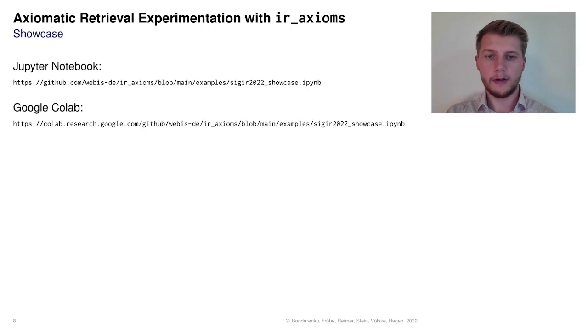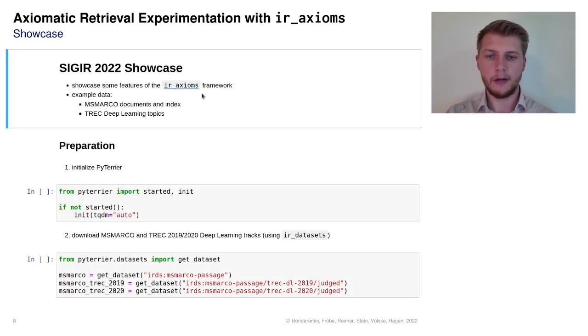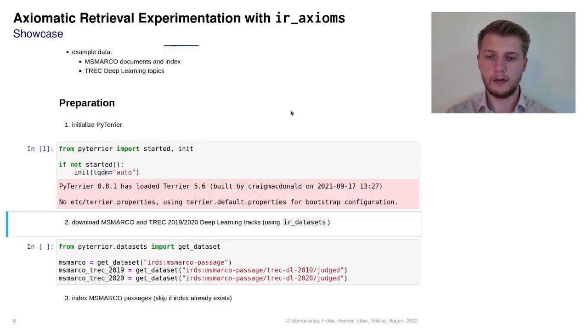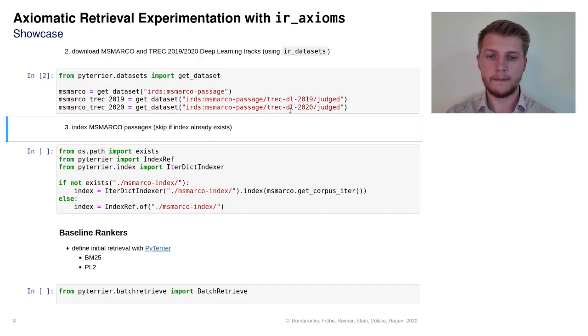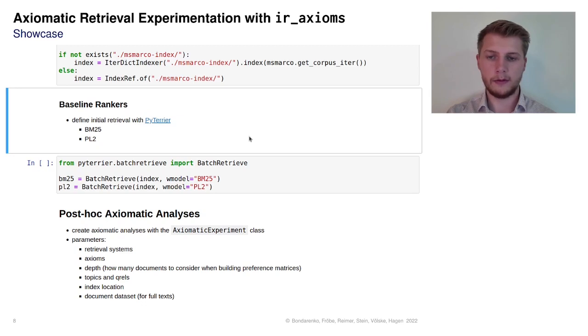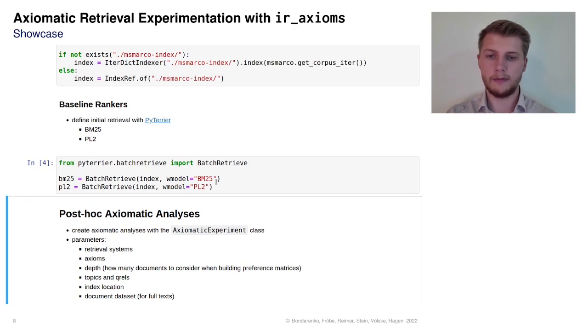We have now prepared some examples of how IR axioms can be used with example data from the MS MARCO dataset and TREC Deep Learning topics. To prepare our experiments, we first need to initialize PyTerrier, download the MS MARCO dataset, and index passages from the dataset. We can then define baseline rankers to compare in our analyses. In this case, BM25 and PL2.